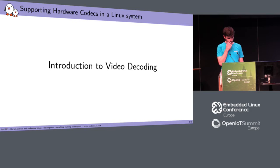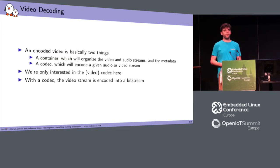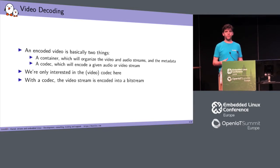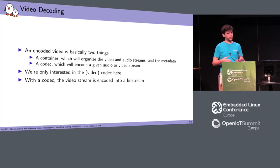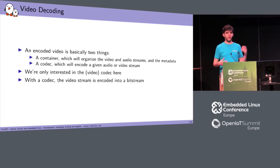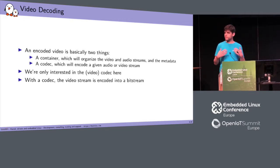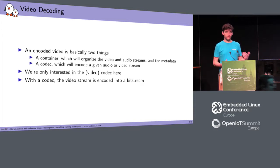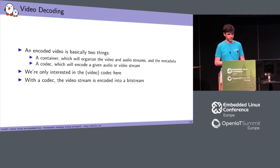Let's get started on video decoding. We need to talk about what an encoded video is. It's basically two things: the file itself is not the video directly — it's first a container. The container organizes within the file the video streams, the audio streams, and some other metadata like subtitles. And then you have one or multiple codecs, which encode data in a compressed format so you can have a decent file size.